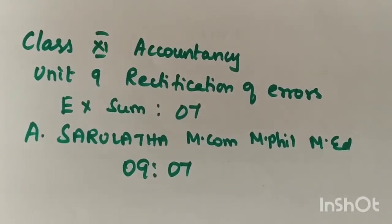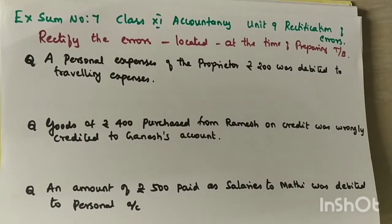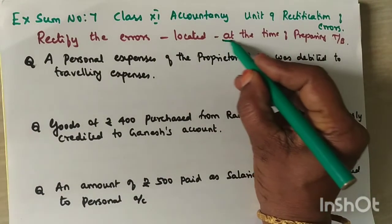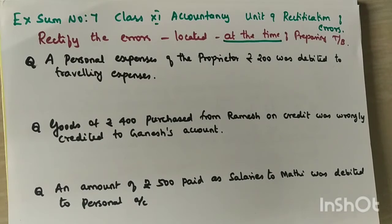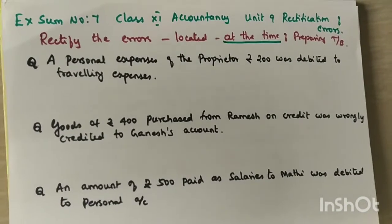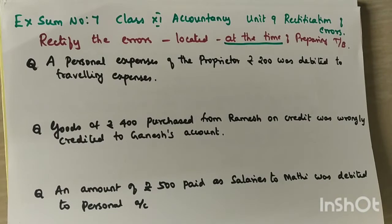Hi, hello and welcome. This is H. Arulatha from Changalpat St. Paul's. Niki class 11 accountants, Unit 9, rectification of errors — XI sum number 7 in the module. This is a sum given in our textbook regarding rectification of errors, XI sum number 7. Rectify the following errors which are located at the time of preparing the trial balance. We have to prepare a rectified journal entry before the trial balance is tallied.